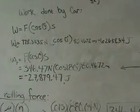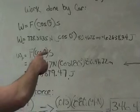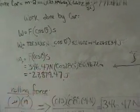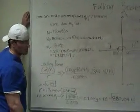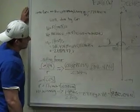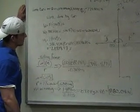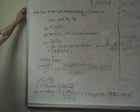It still was an angle, but it wasn't. And then the distance over here, 80.4672 meters. And that equals 62,634.34 joules.